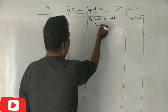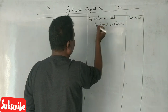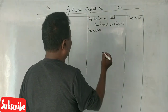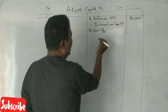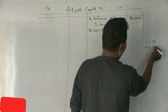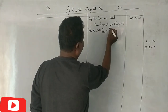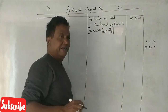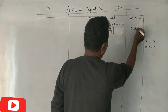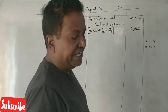Interest on capital is calculated from 1st April 2017. From April to December is 9 months. The interest on capital for 9 months comes to 4,200. The next adjustment is the salary.